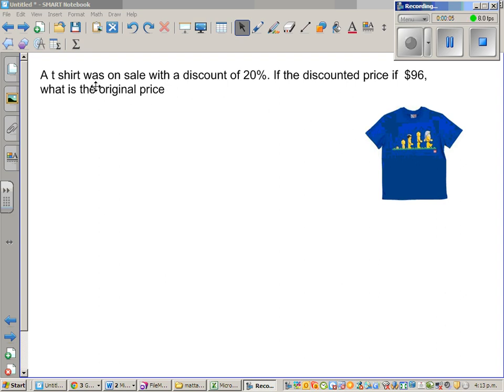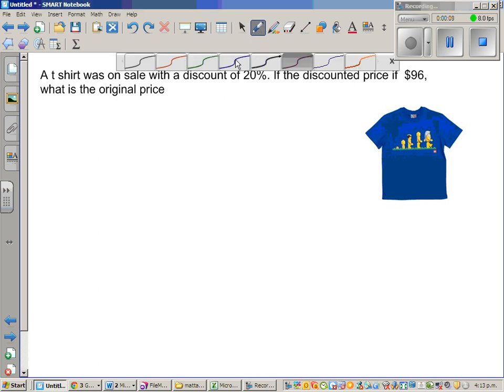A t-shirt was on sale with a discount of 20%. If the discounted price is $96, what's the original price? So this had an original price and what happened was there was a sale and this was put on sale with a discount of 20%. The question is, discounted price means after considering the discount, the discounted price was $96.